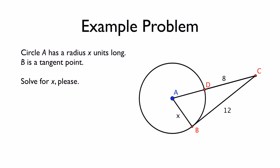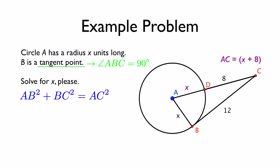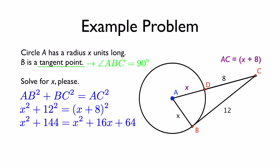Let's look at an example. Circle A has a radius of x units, B is a tangent point, and we want to solve for x. Since we have a tangent point, angle ABC is 90 degrees. AB is a radius, AD is also a radius, so the entire length AC is x plus 8. Triangle ABC is a right triangle, so we solve using the Pythagorean theorem. Make sure you FOIL out x plus 8, subtract x squared from both sides, subtract 64, and finally divide by 16.